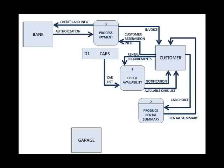The bank will send back an authorization, usually with a code that indicates whether it is accepted or declined. If it's accepted, the process gives the customer an invoice. If it's declined, it gives the customer a card decline notification.